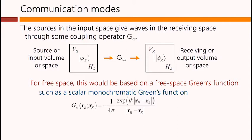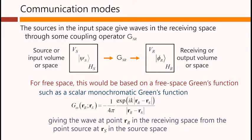such as a scalar monochromatic Green's function like this one here. And what a Green's function does is it gives the wave at some point Rr in the receiving space that results from the point source at Rs in the source space.